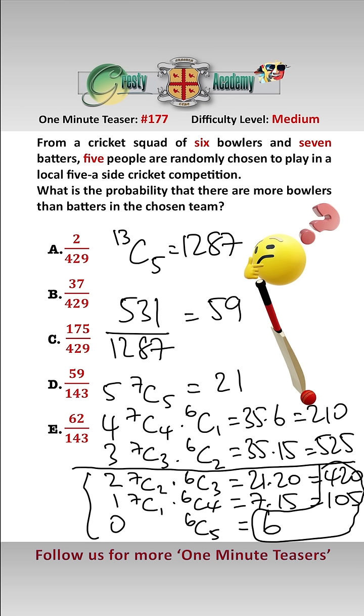That's the probability and that simplifies to 59 over 143 which is answer D.